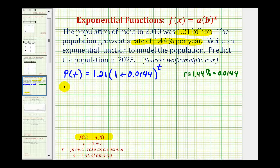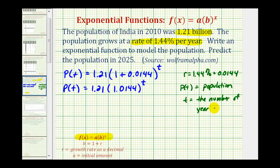Let's go ahead and simplify this. We have p of t equals 1.21 times 1.0144 raised to the power of t. So p of t will be the population, and t will be the number of years after our base year of 2010. So here's the function that we can use to model the population of India.